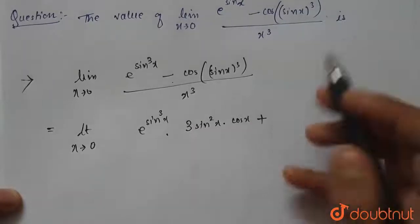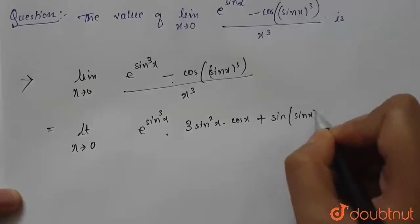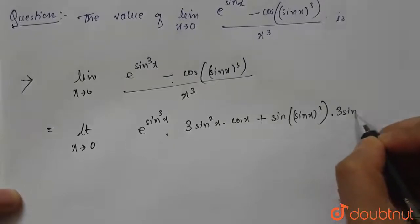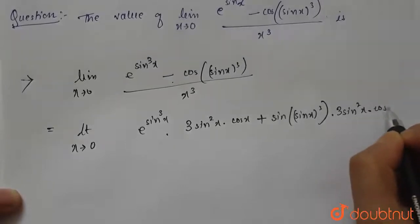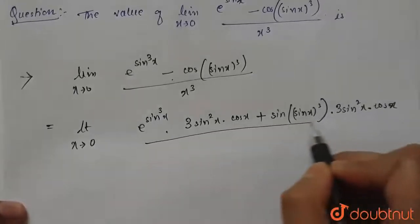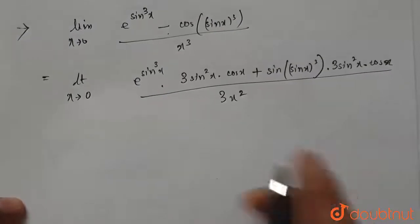—this will be sin(sin x)³ · 3 sin²x · cos x using chain rule. Now divided by 3x². Now this part